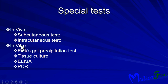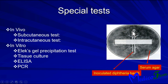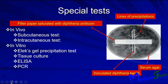Special tests include in vivo and in vitro tests. In vivo tests include subcutaneous and intracutaneous tests. In vitro tests include the Elek precipitation test, tissue culture, and PCR. The main test for diphtheria is the Elek precipitation test: nutrient agar with serum is prepared, the test organism Corynebacterium diphtheriae is inoculated in a central line, and a filter paper strip saturated with diphtheria antitoxin is placed perpendicular. After incubation, a line of precipitation indicates a positive Elek test.